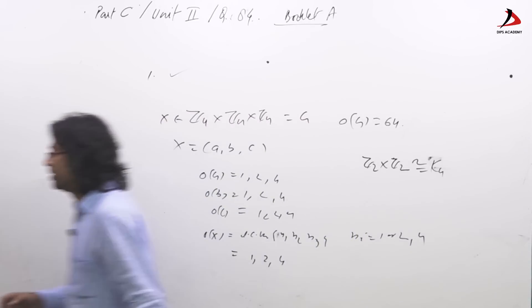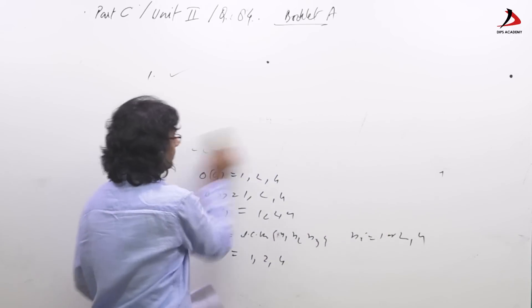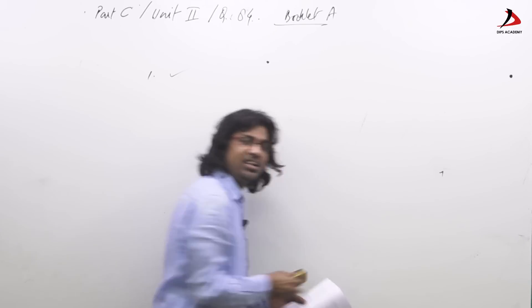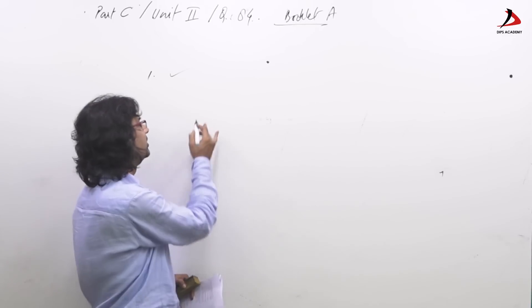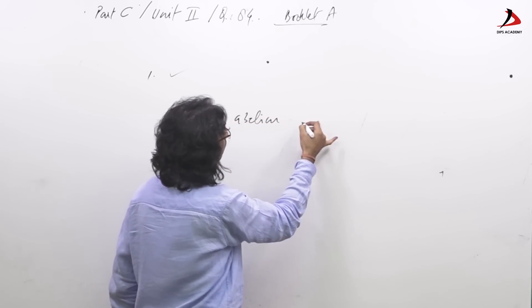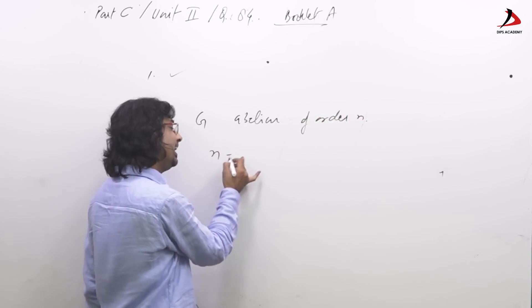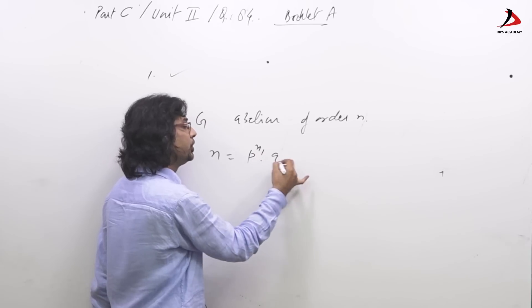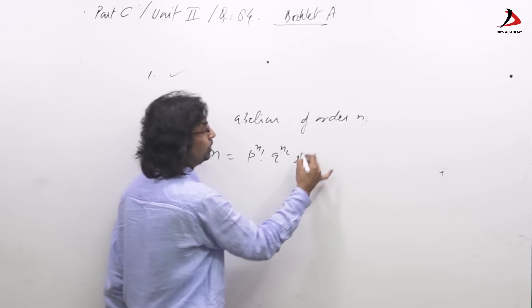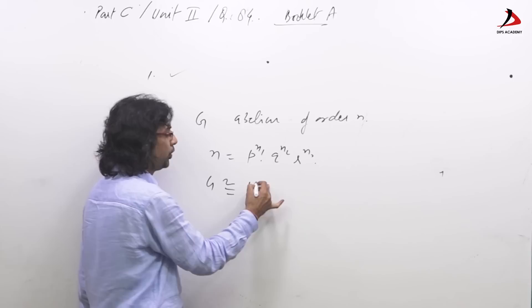Now option four talks about one theorem and that result: if g is abelian of order n and n equal to p to the power n1, q to the power n2, r to the power n3 etcetera, then g is isomorphic to h1 cross h2 cross h3 and so on.